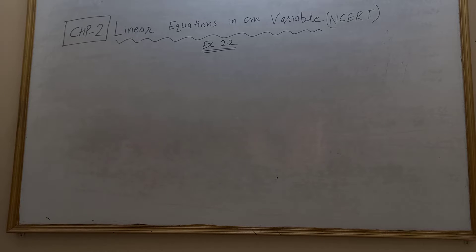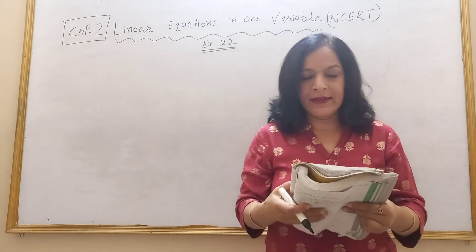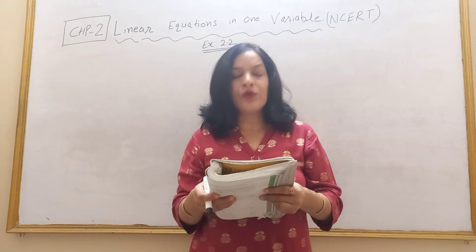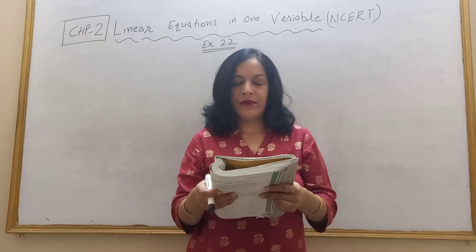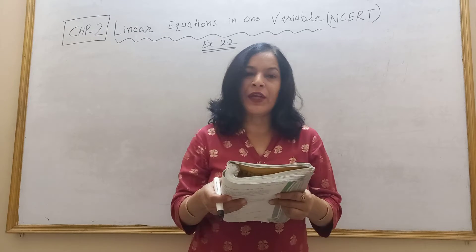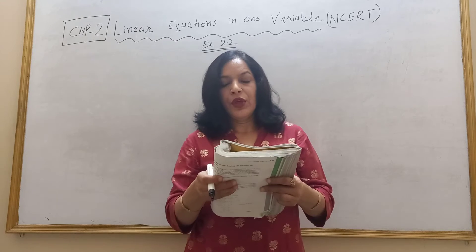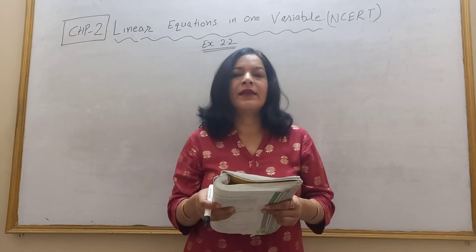Hello students, today we will solve exercise 2.2 class with NCERT. Question number 1 is: if you subtract 1 by 2 from a number and multiply the result by 1 by 2, you get 1 by 8. What is the number?